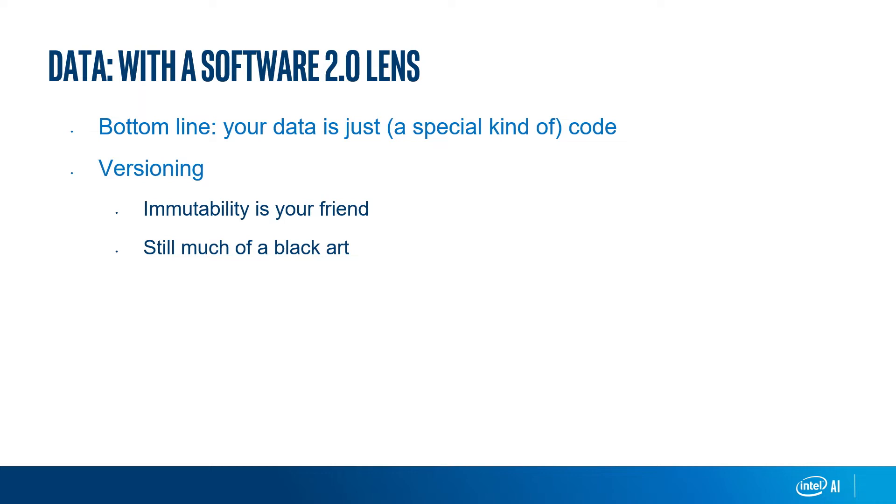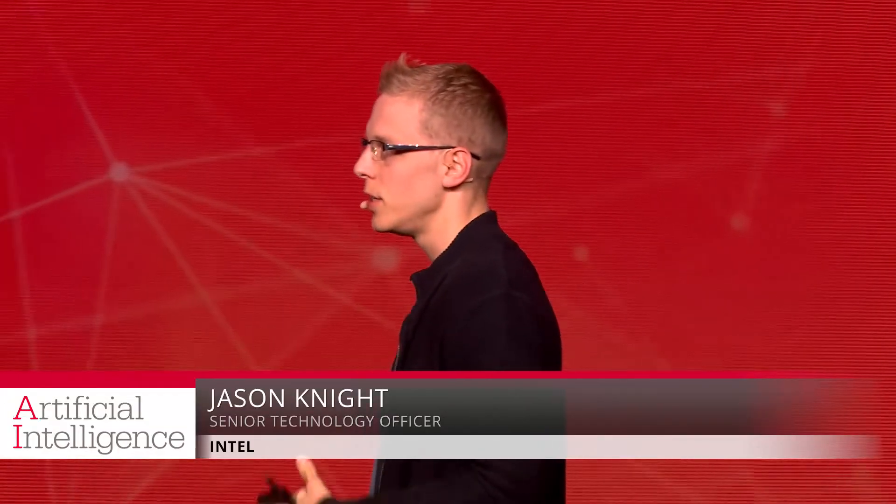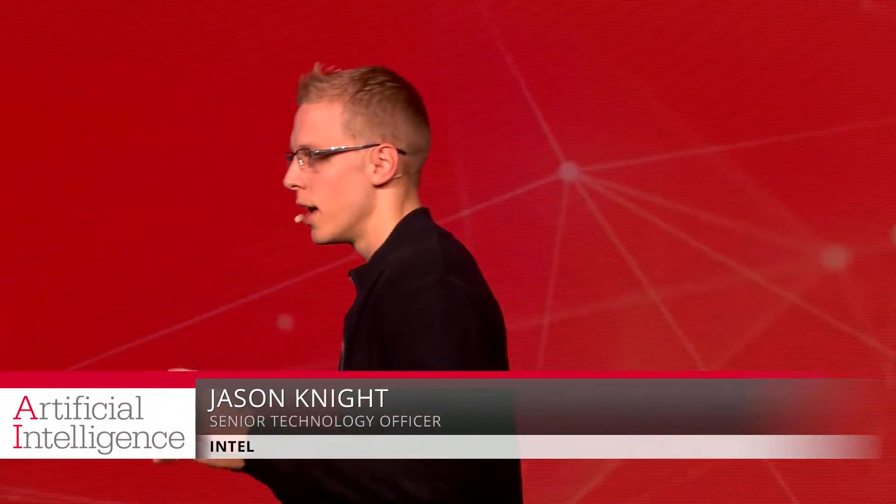How do you version data? It's a little tricky. If you're lucky enough to use data that's immutable — from an immutable store with copy-on-write or append-only semantics — then you're much better positioned than versioning more mutable stores like traditional databases. This is still somewhat of a black art, but it's very critical in order to track your models in terms of where the model came from, which data it originated from in the training process.